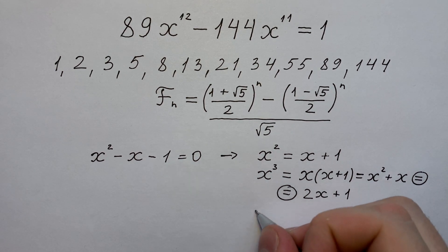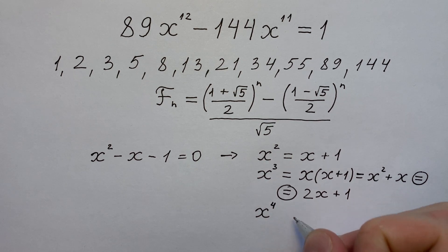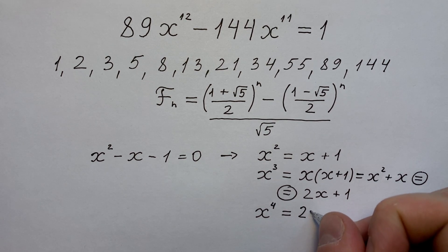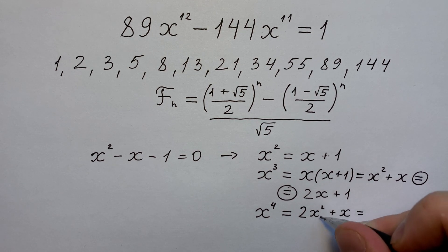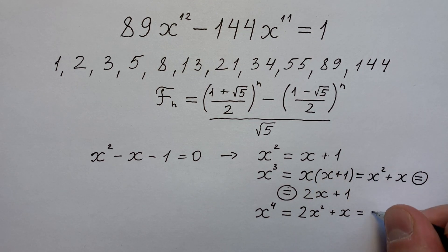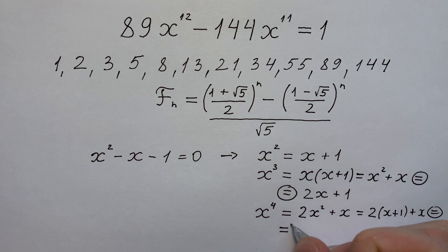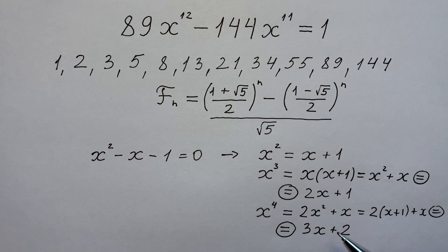Using this logic, x to the power of 4 equals 2 times x squared plus x, or x squared equals x plus 1, so 2 times (x plus 1) plus x, which equals 3 times x plus 2. And our logic here is simple.